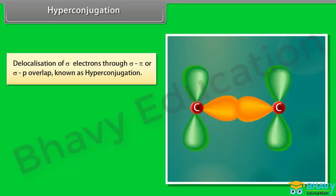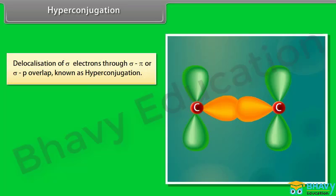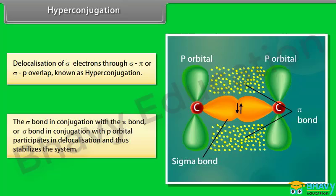Hyperconjugation is the delocalization of sigma electrons through sigma-pi or sigma-p orbital overlap. The sigma bond in conjugation with a pi bond or with a p orbital participates in delocalization, thus stabilizing the system.